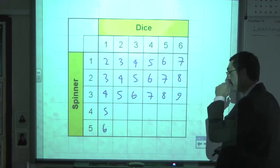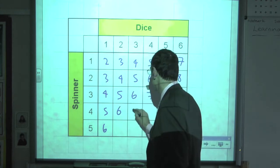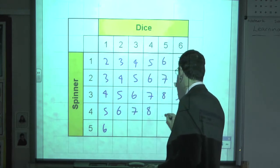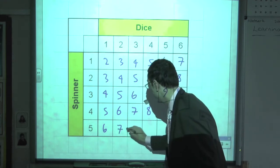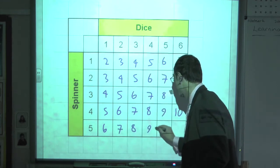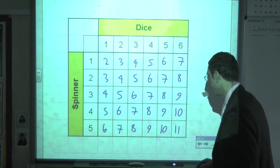Hopefully you can start to see the patterns. It's fairly obvious what's going on. 6, 7, 8, 9, 10. And lastly, 7, 8, 9, 10, and 11 there.